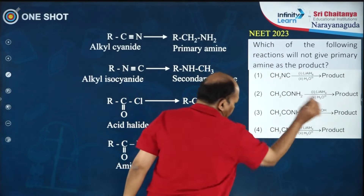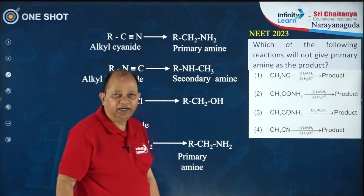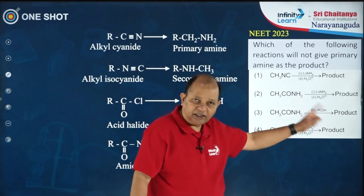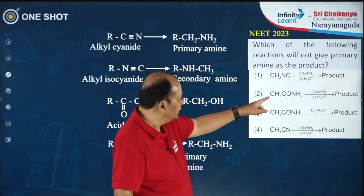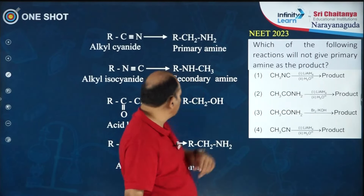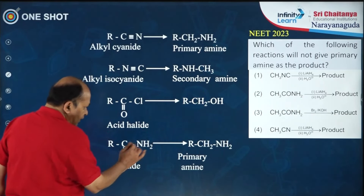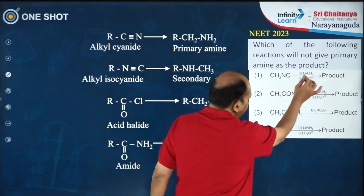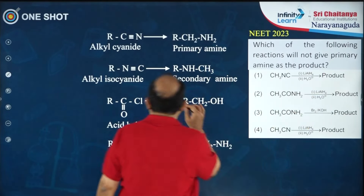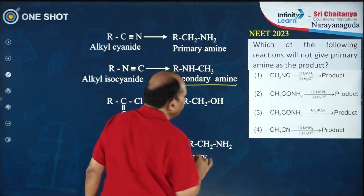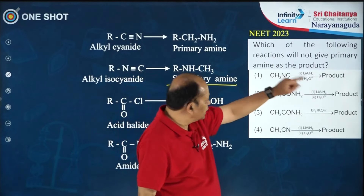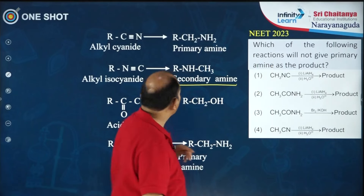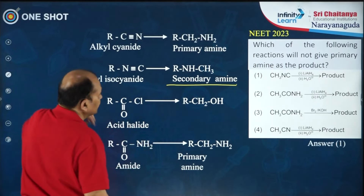Isocyanide on reduction with LiAlH4 will give secondary amine. So which of the following will not give primary amine — this reaction gives secondary amine. Therefore, option 1 is the right answer.